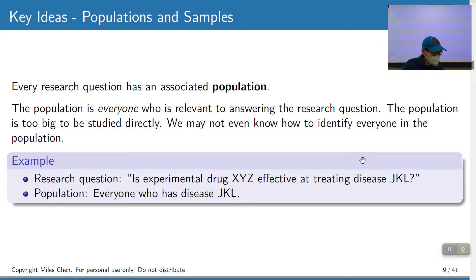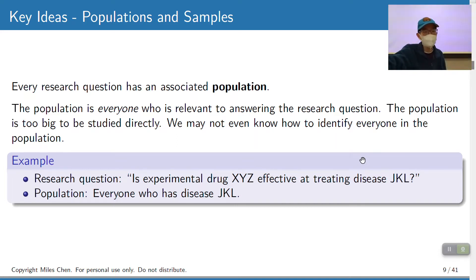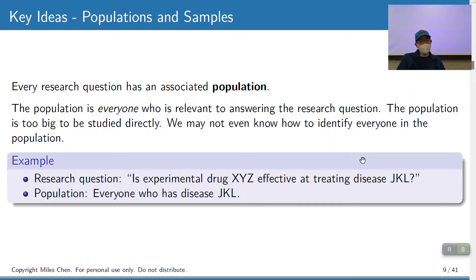When we ask a research question, every research question has some kind of associated population — everyone who's relevant to answering the research question. The problem is the population is always too big for us to study it directly, and we might not even know how to identify everyone in the population.